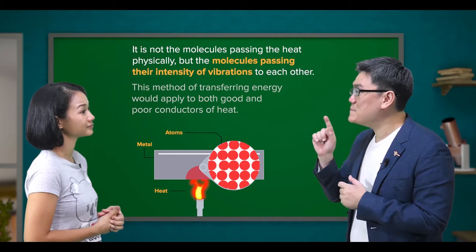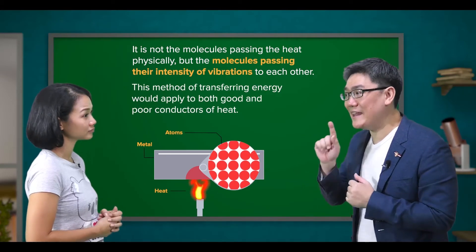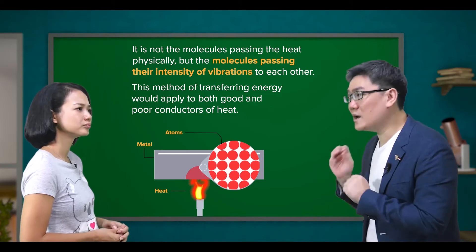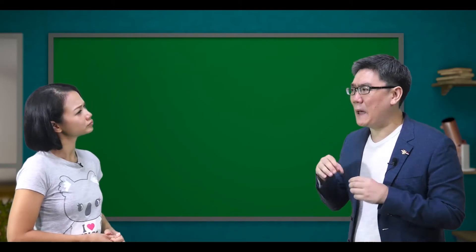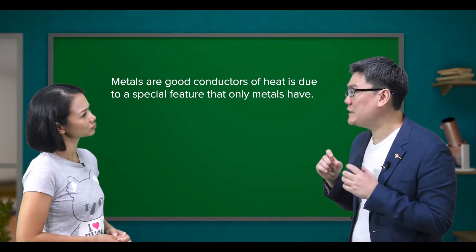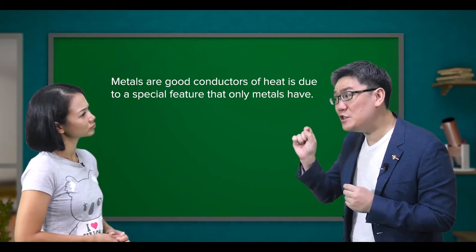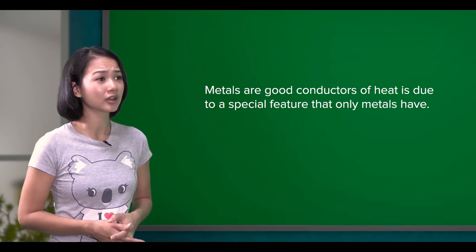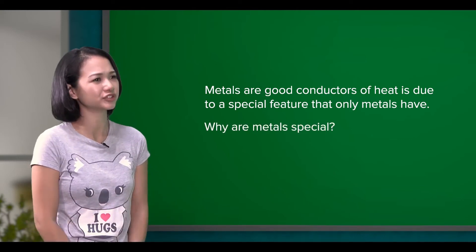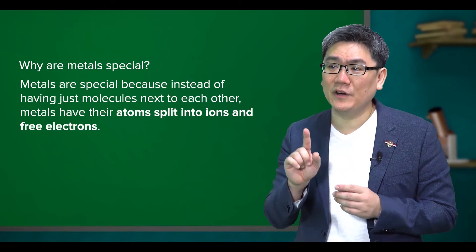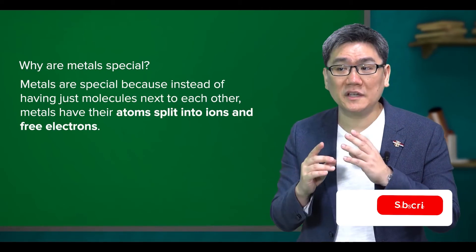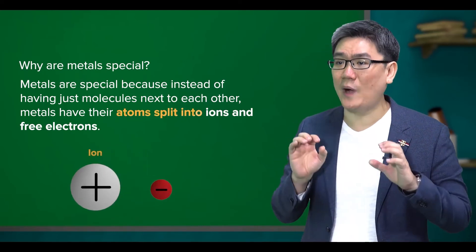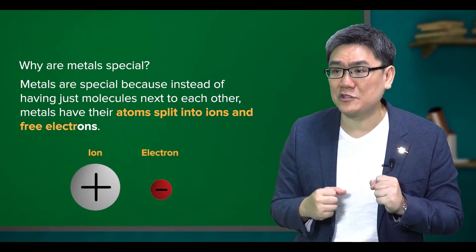That's right. This method of transferring energy would apply to both good and poor conductors of heat. But what makes metals good conductors of heat is a special feature that only metals have. Metals are special because instead of having just molecules next to each other, metals have their atoms split into ions and free electrons.